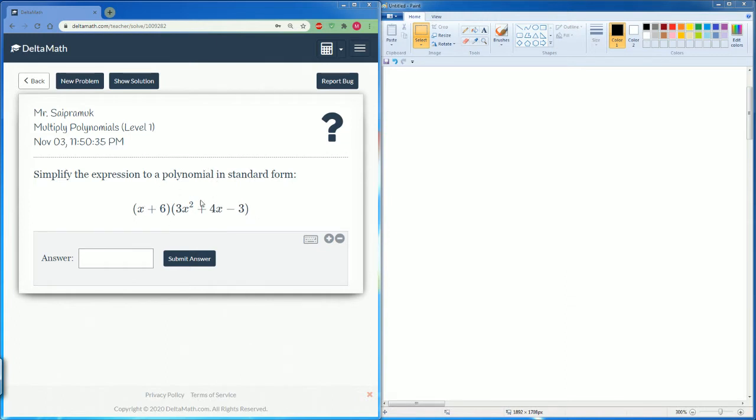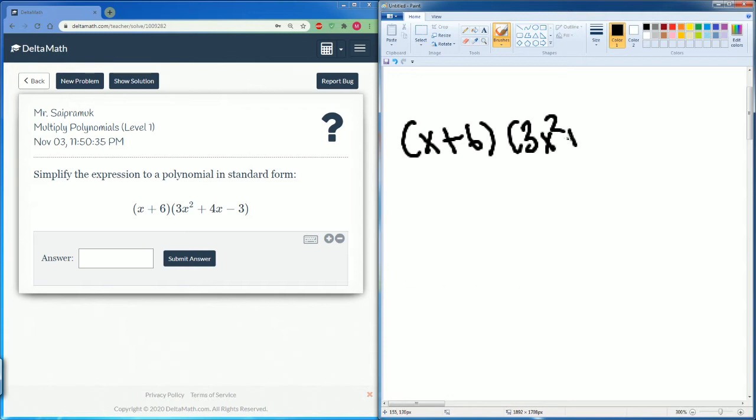Here, one of them is going to be three terms. So you have two terms in this parentheses, then you have three terms here in this parentheses. It's the same thing, we're just going to distribute the same way. So we have x plus 6 in the first parentheses, then we have 3x squared plus 4x minus 3.